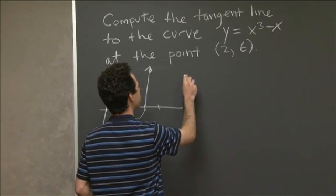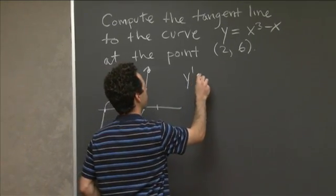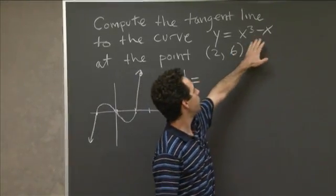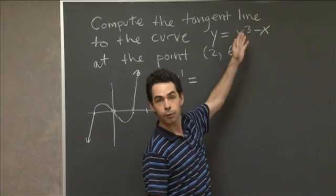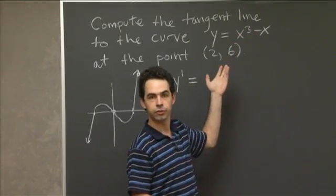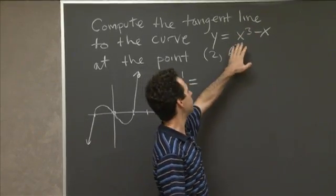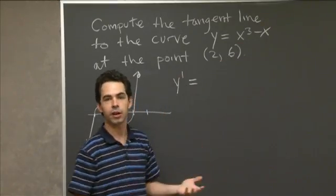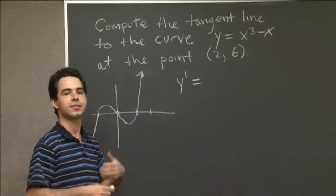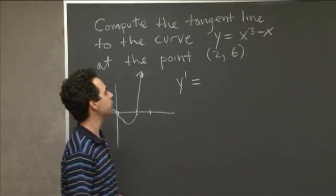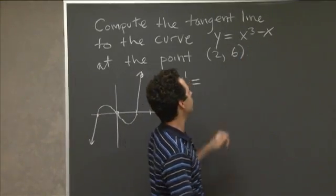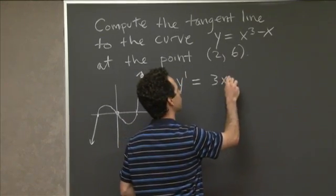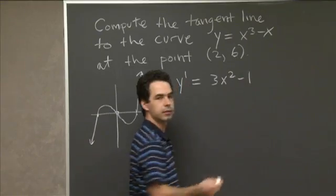The derivative of this function is y'. Here we have a sum of two things, both powers of x. We learned that the derivative of x^n is n·x^(n-1), and the derivative of a sum is the sum of the derivatives. So the derivative of x³ - x is 3x² - 1.